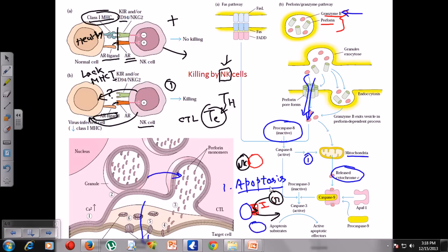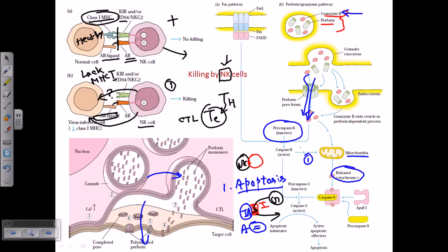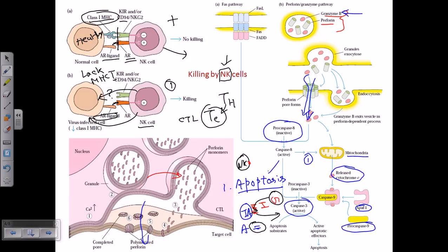The active procaspase then activates procaspase C into active caspase C, which triggers the apoptosis pathway. It also produces other components like APAF-1 and procaspase 9, leading to the caspase-encoding cascade. Ultimately, this guides the infected cell through apoptosis — programmed cell death. So NK cells don't kill directly; rather, they trigger the cell's own autolysis machinery, called apoptosis.